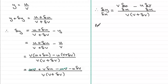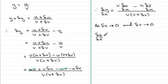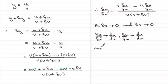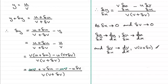As we let delta x tend to 0, and delta v also tends to 0: delta y over delta x tends towards dy/dx; delta u over delta x tends towards du/dx; delta v over delta x tends towards dv/dx; and v multiplied by v plus delta v — since delta v tends to 0 — tends towards v squared.